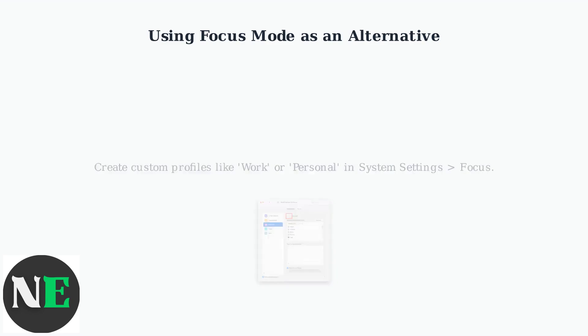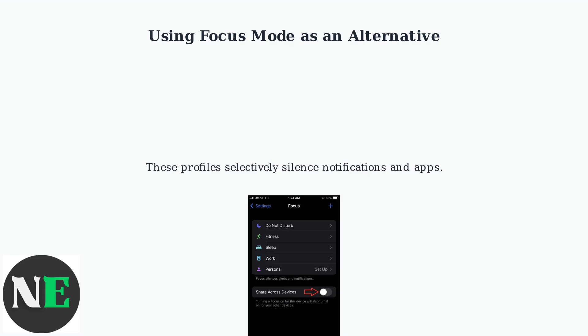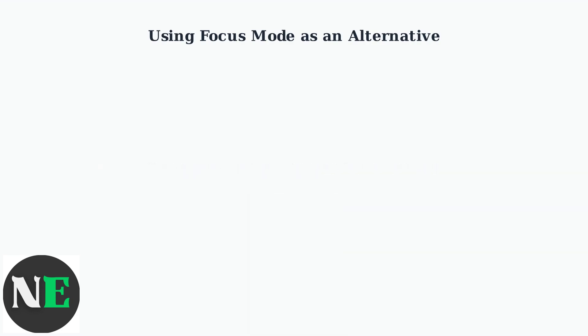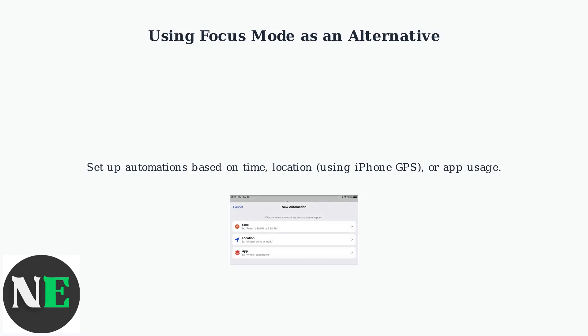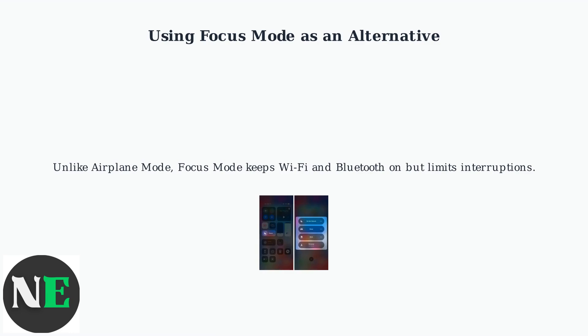Create custom profiles like Work or Personal in System Settings under Focus. These profiles selectively silence notifications and apps. You can also set up automations based on time, location using iPhone GPS, or app usage.